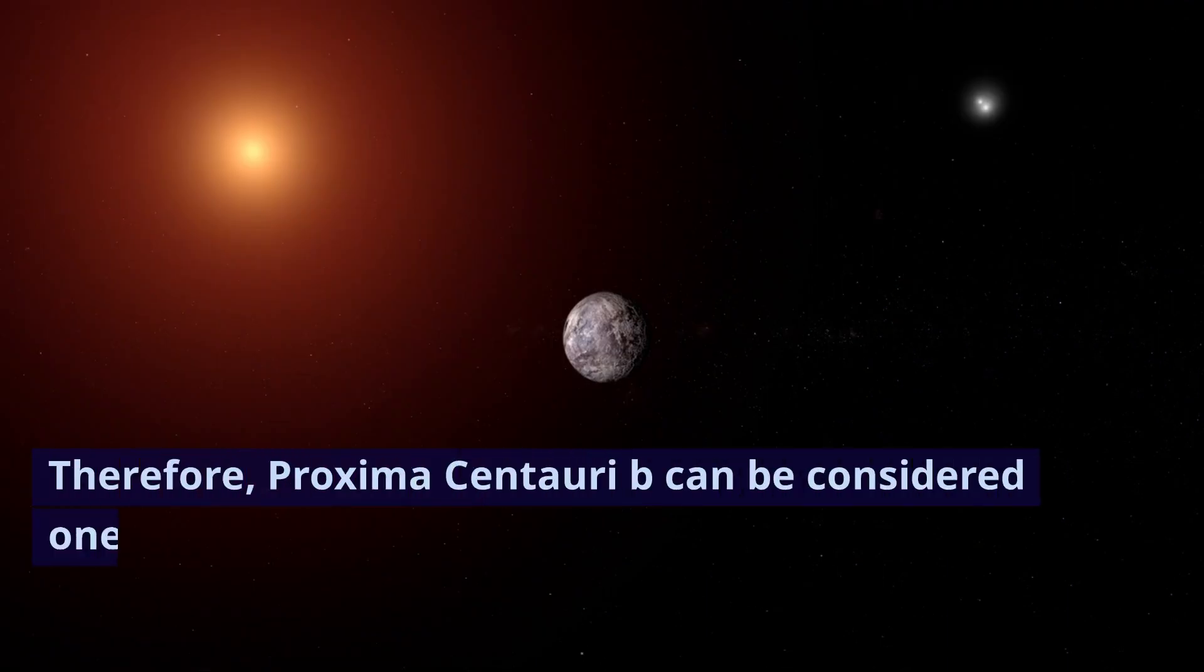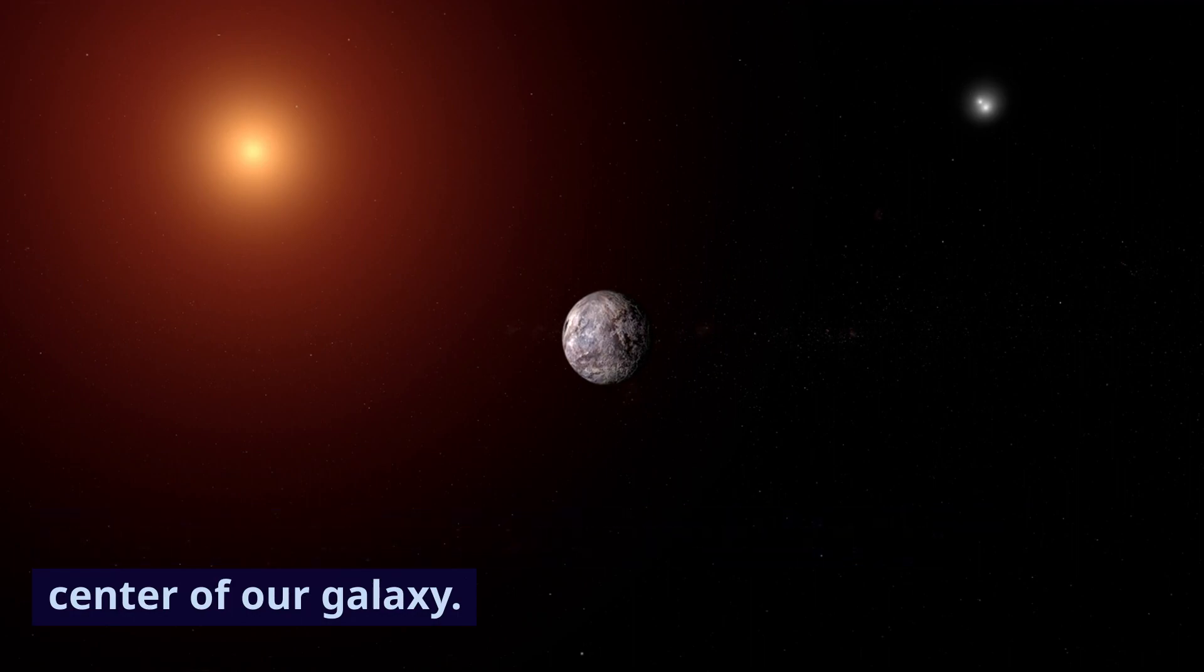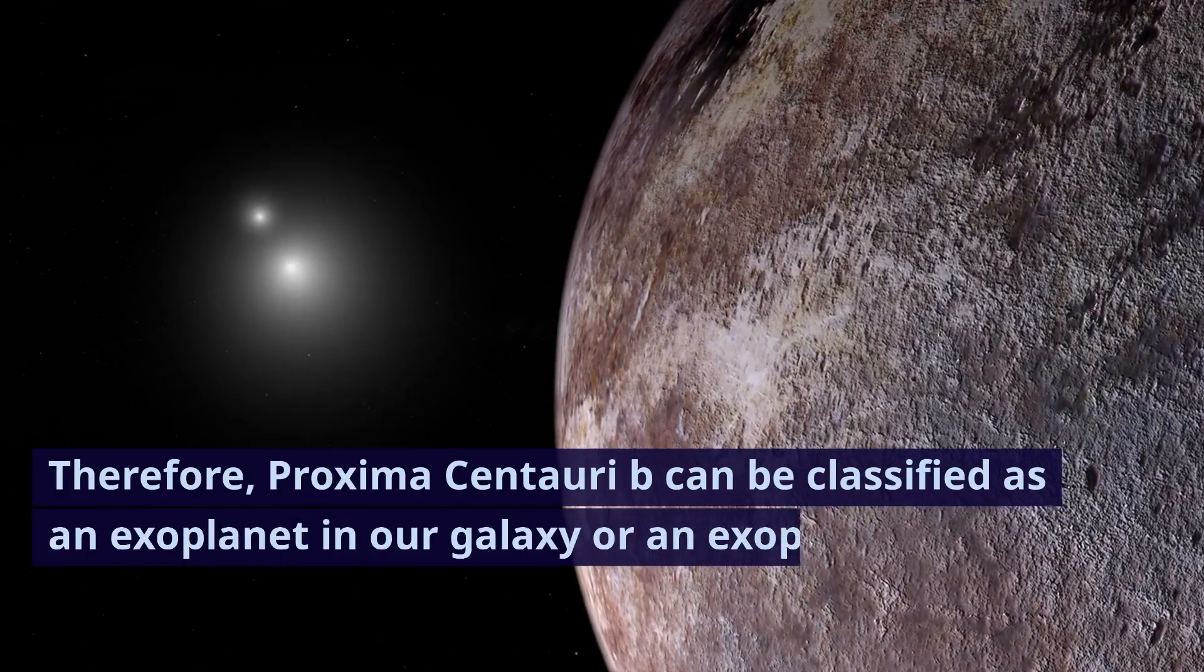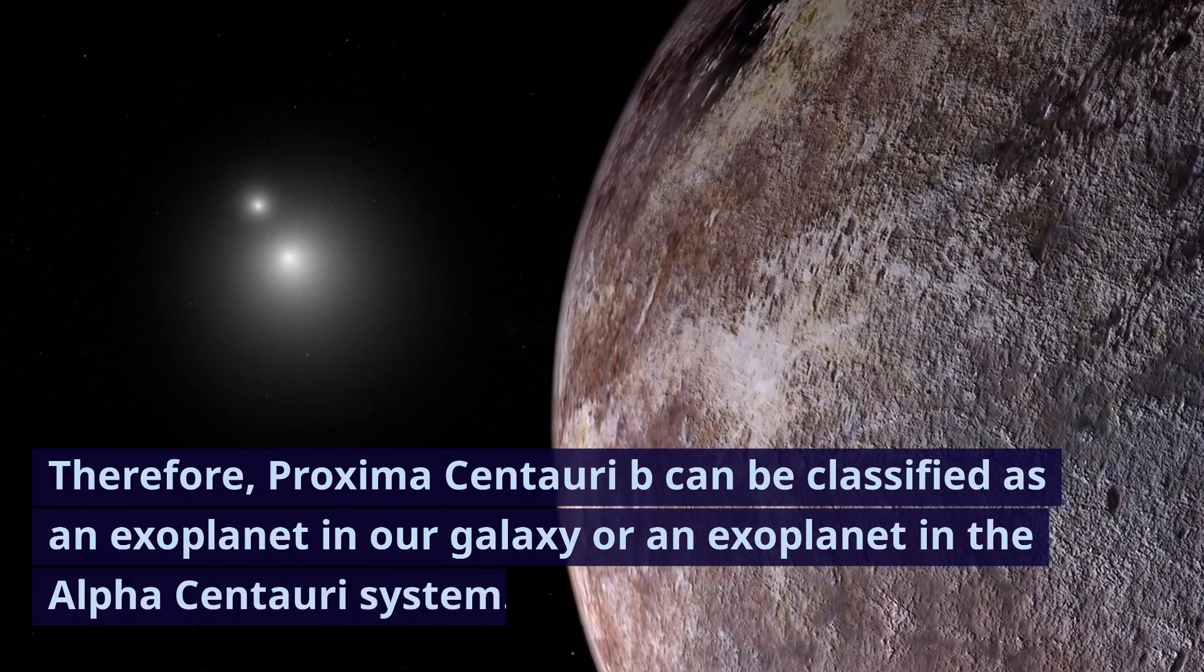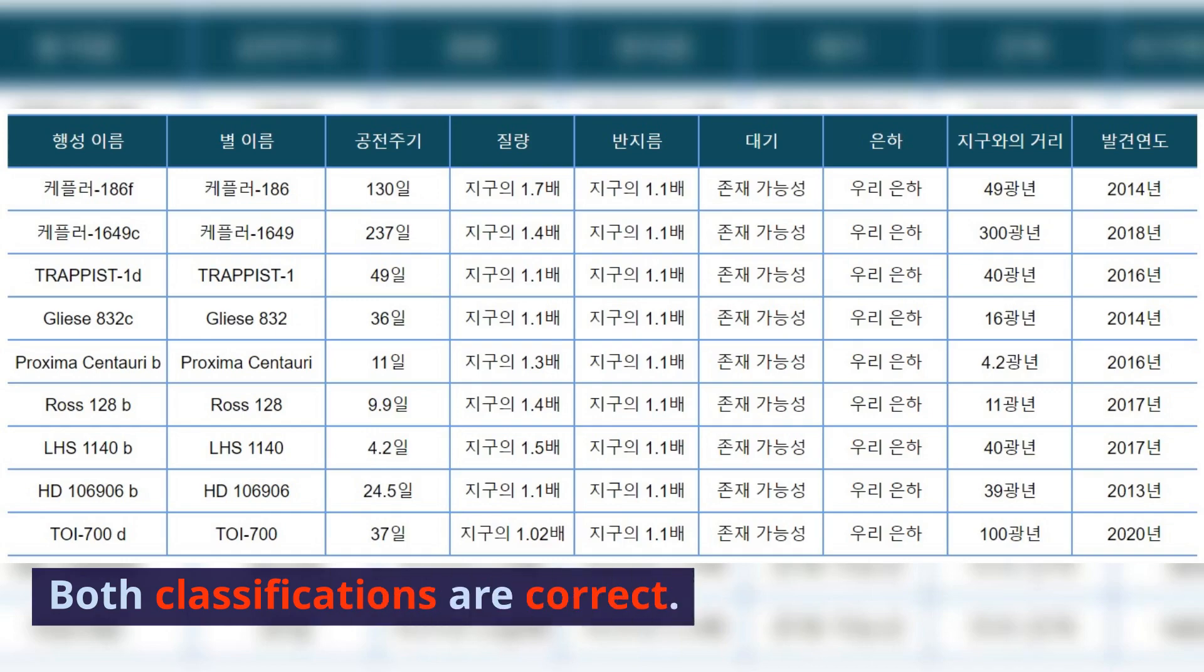Therefore, Proxima Centauri b can be considered one of the most distant exoplanets from the center of our galaxy. Proxima Centauri b can be classified as an exoplanet in our galaxy or an exoplanet in the Alpha Centauri system. Both classifications are correct.